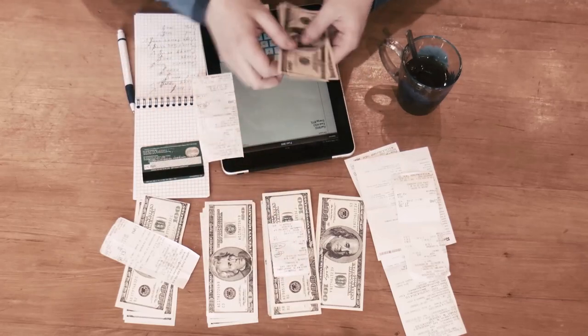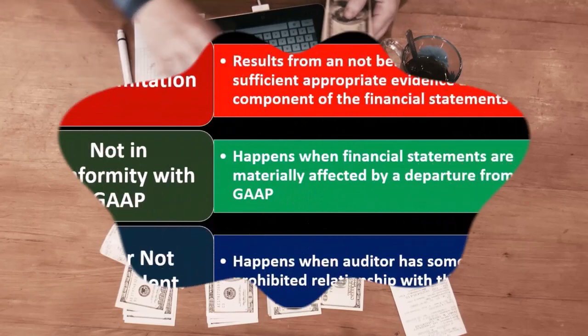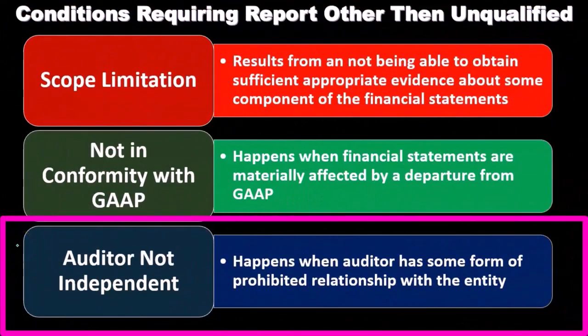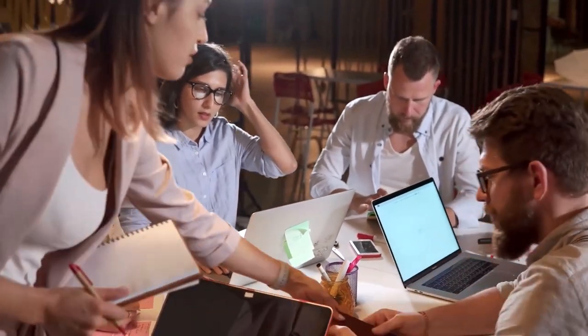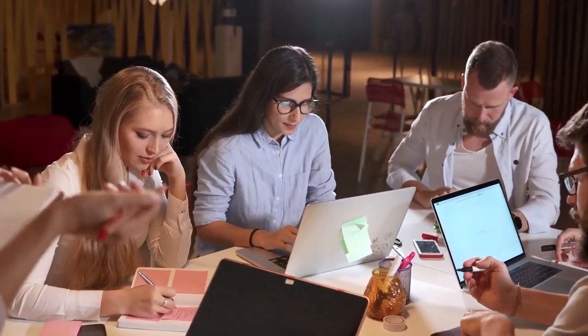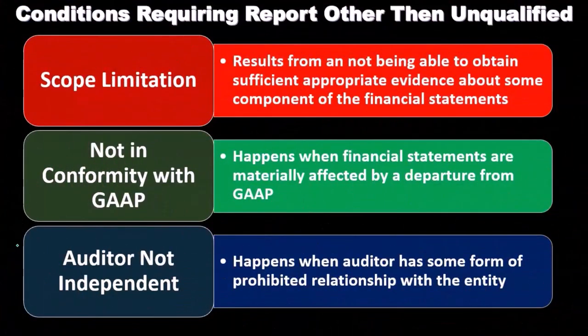A qualification or some type of report other than a standard unqualified report occurs when the auditor is not independent — meaning they have some form of prohibited relationship with the entity. Independence is a key component when putting the audit together, and it needs to be independent specifically in terms of the relationship between the auditor and the client.